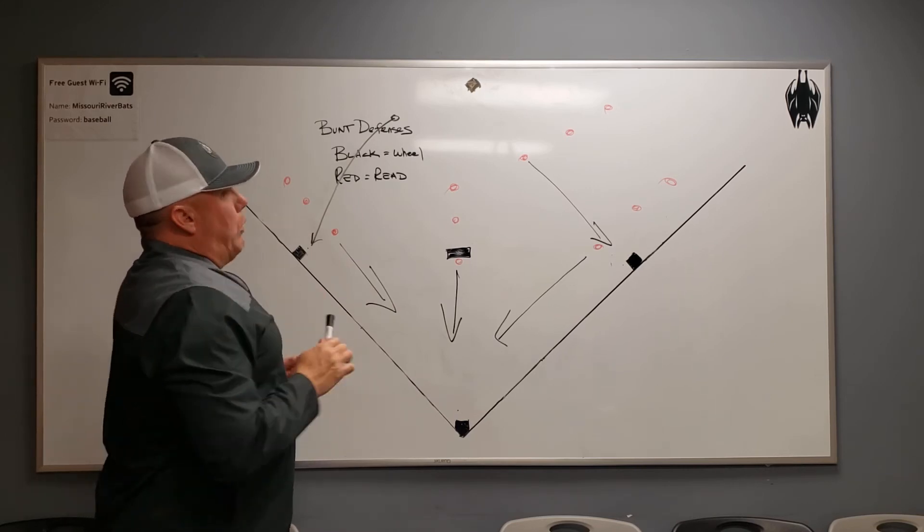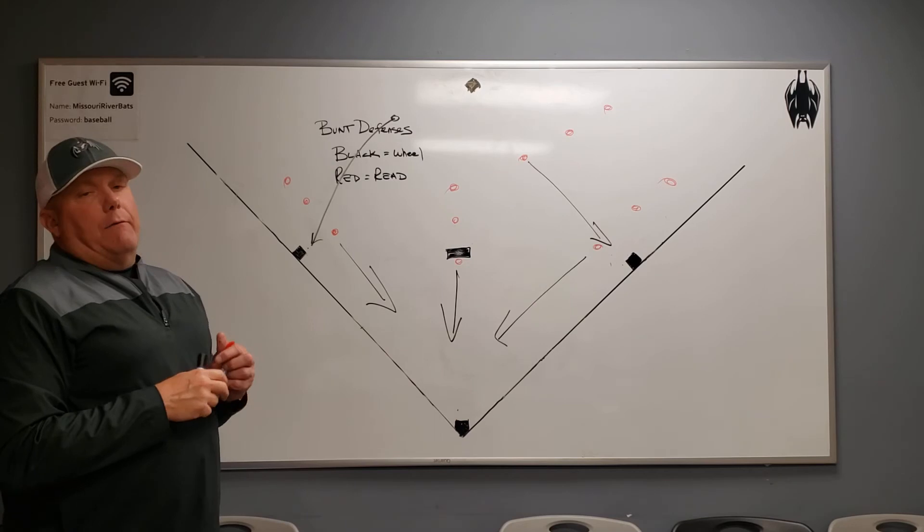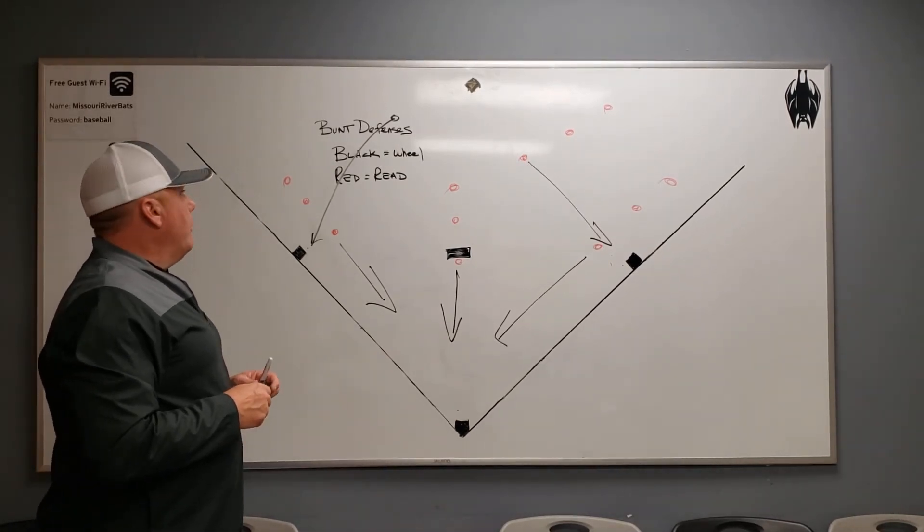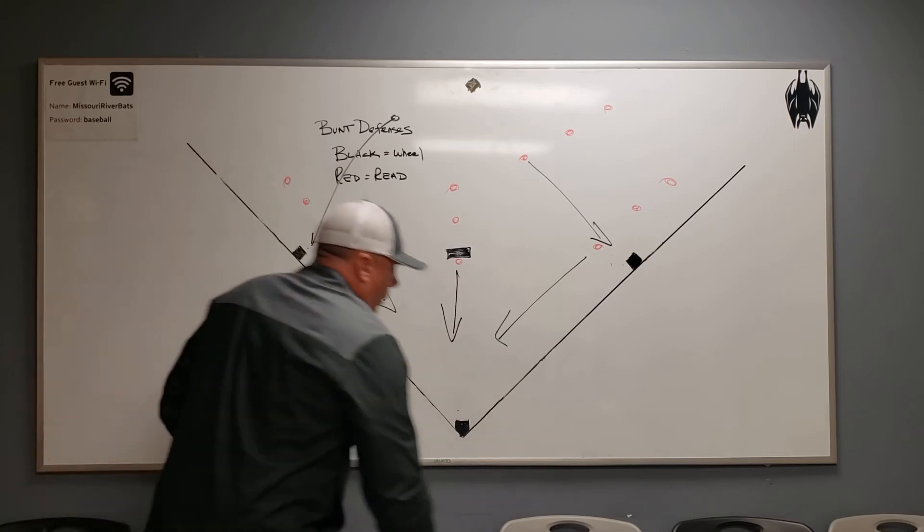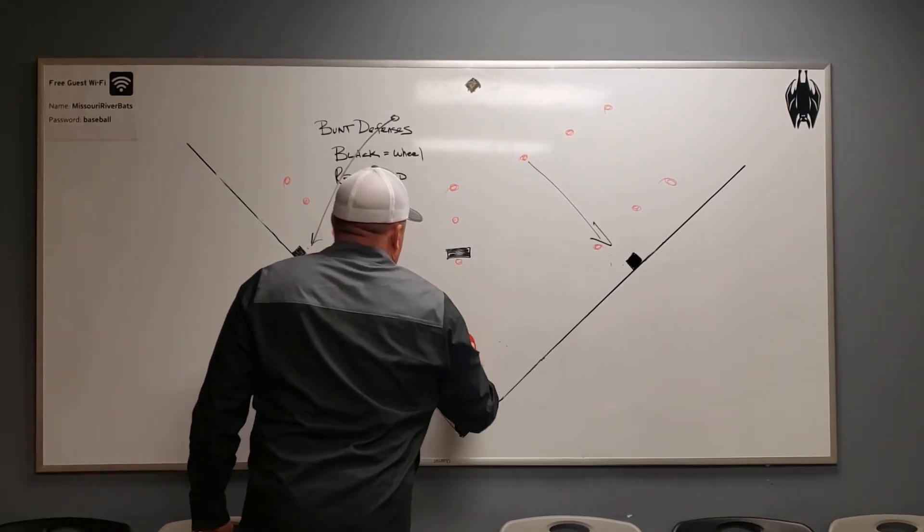Now, if we call red, then it's a read defense. And you want to read to see if you would potentially have an out at third. Because that's probably what they're trying to do is advance that runner to third. And so, what we'll do in the read defense.